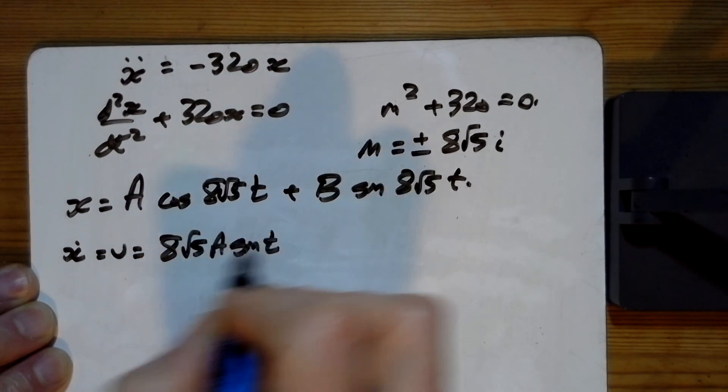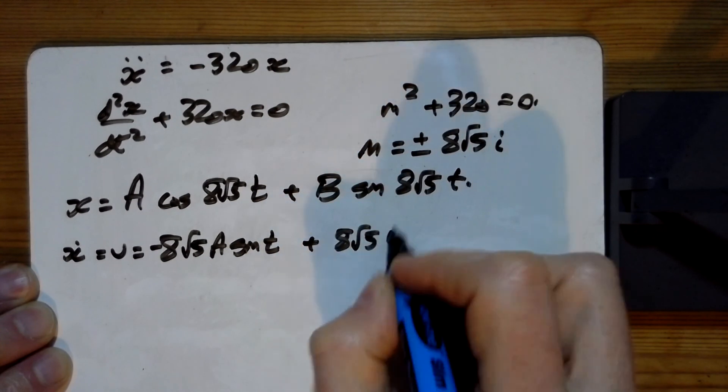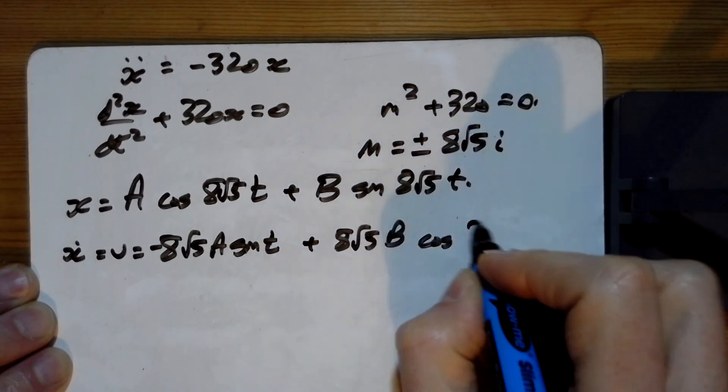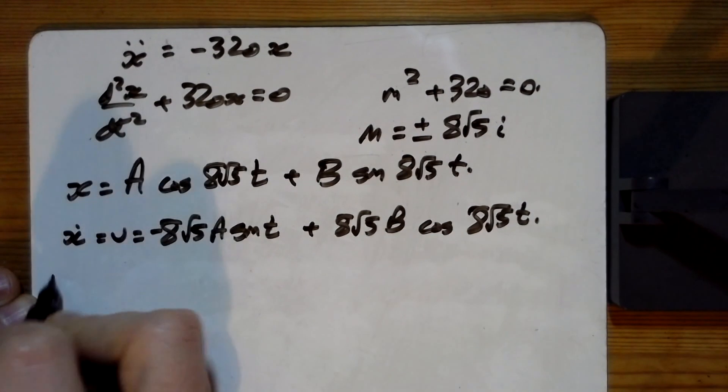sin 8√5t (that one's negative) plus 8√5B cos 8√5t. For that bit there, we're told